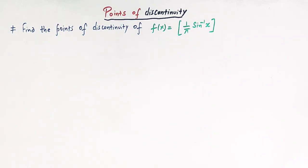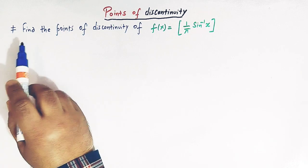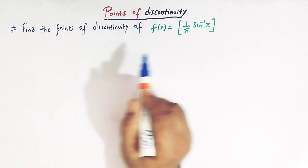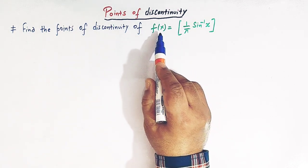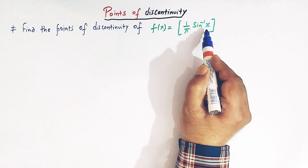Hello viewers. In today's class we are going to discuss one important problem from discontinuity. Here we are going to see a simple problem — how to find the points of discontinuity when a function is given. We'll solve a problem which involves the greatest integer function and the inverse trigonometric function. The problem is to find the points of discontinuity of f(x) = ⌊(1/π)·sin⁻¹x⌋.